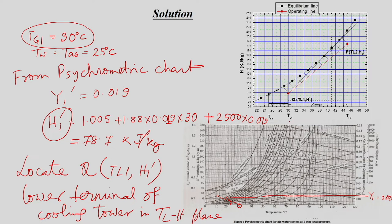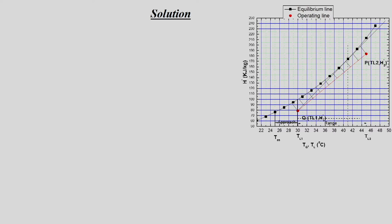In the TL-H plane, the lower terminal point has TL1 = 30°C and enthalpy 78.7 kJ/kg. This point is now identified. We then proceed to generate the equilibrium curve for the temperature range from 20°C to 47°C, within which the entire cooling tower operates.